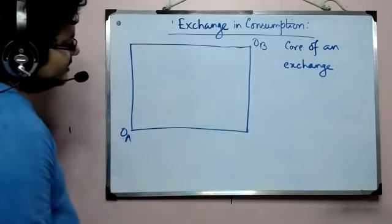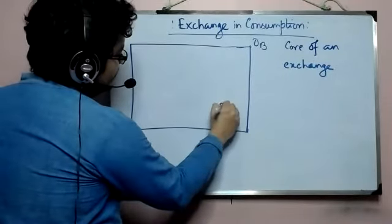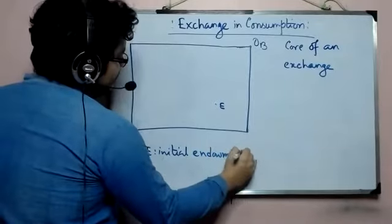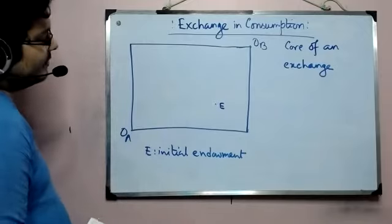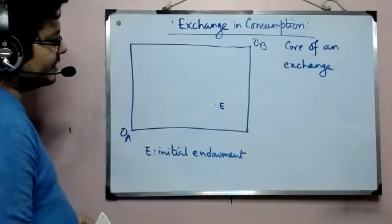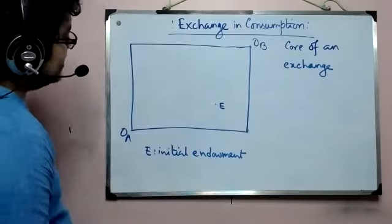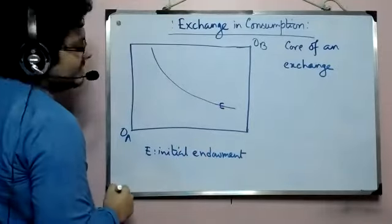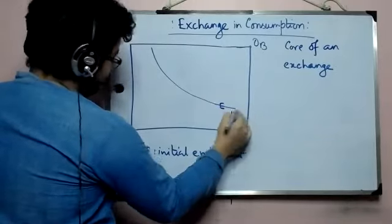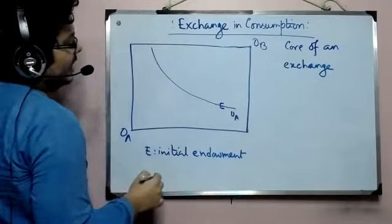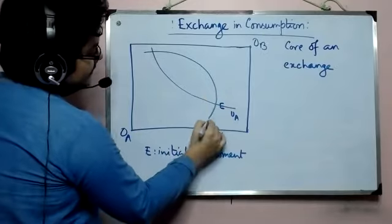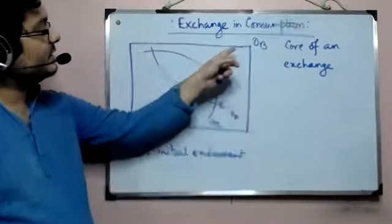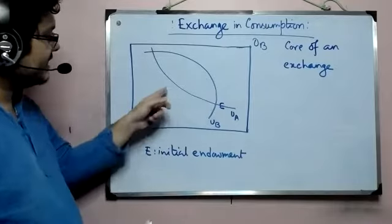The idea is to start with an arbitrary point E, where E is the initial endowment. Since from the knowledge of consumer behavior we know that the indifference map of both individuals is dense, we can always find two ICs which satisfy two criteria: number one is that each of them passes through E. This is the IC of individual A, and this is the IC of individual B. We maintain our assumption that B's IC is convex to the origin of B, and A's IC is convex to the origin of A.